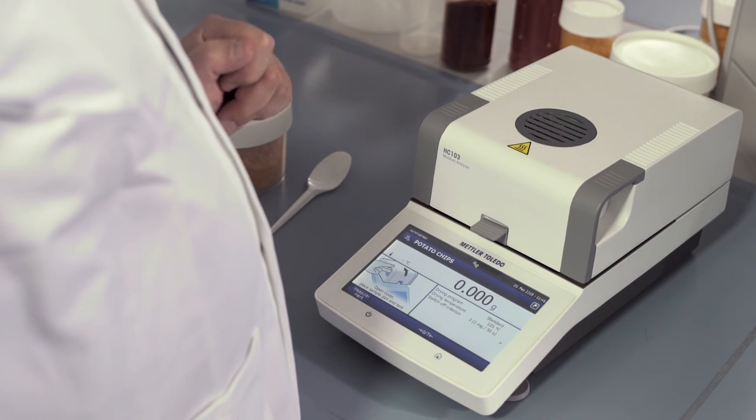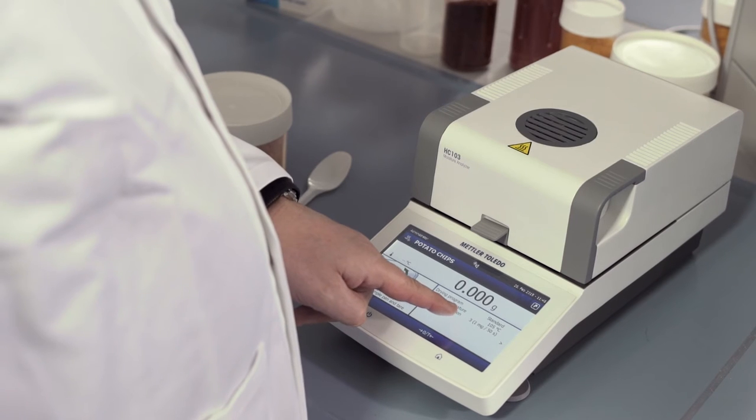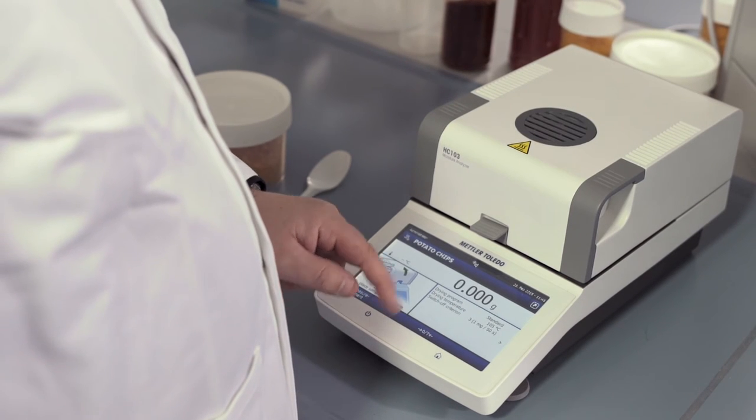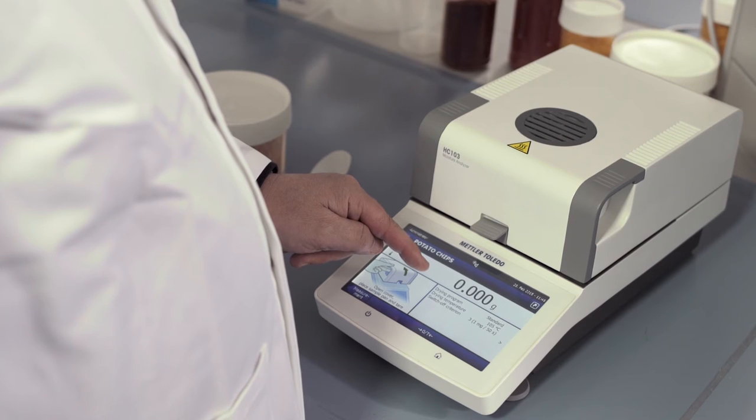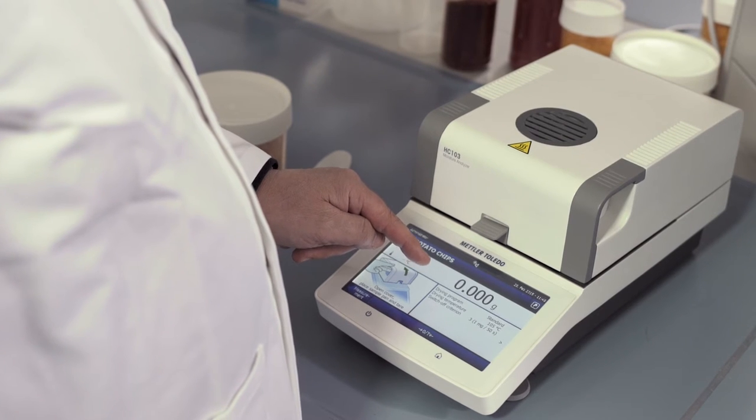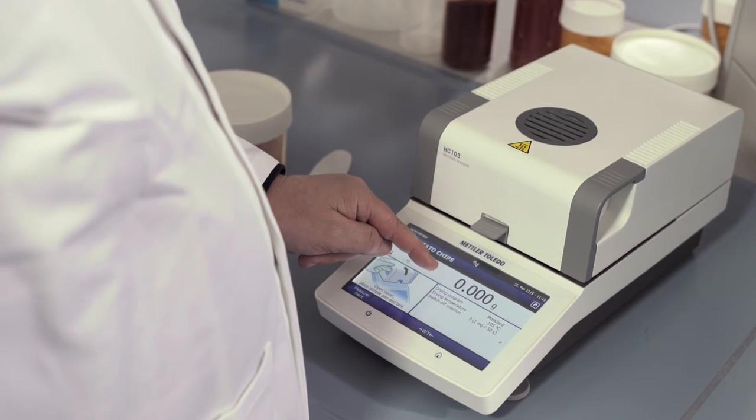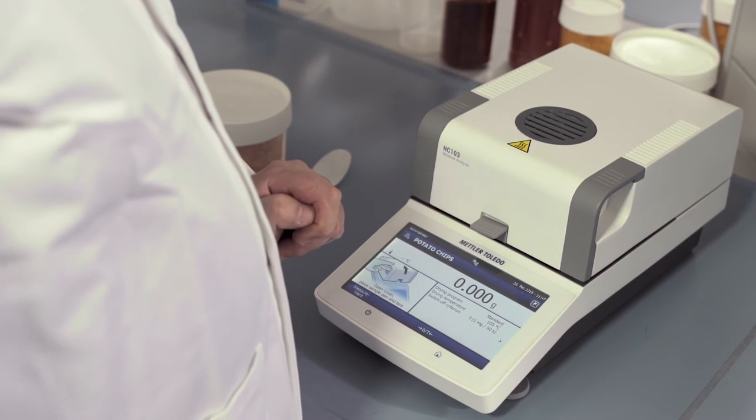On the right of the terminal screen, you can see the active measurement parameters: 105 degrees drying temperature, standard drying program, and automatic switch-off criterion.